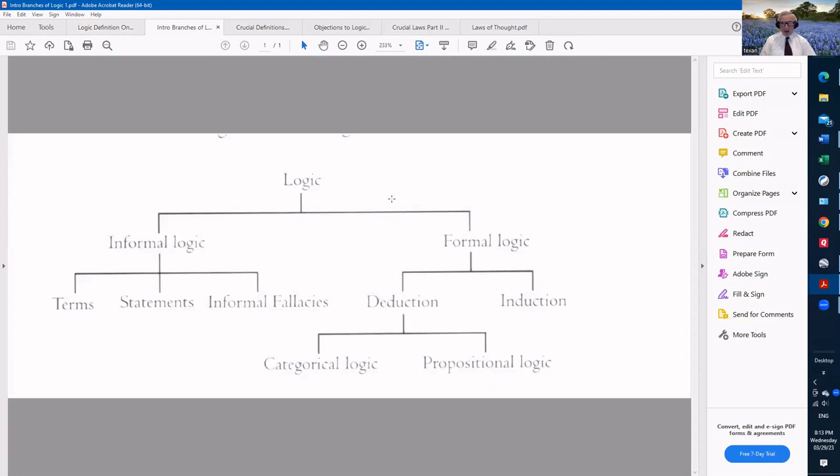Let's look at the different branches of logic. The overall subject is logic, but there's two branches of logic: informal logic, and we will get into that some, defining terms and making statements and the informal fallacies. But there's also the formal logic, and we'll deal quite a bit with the deductive formal logic. And there's two categories of that: there's categorical logic and propositional logic.